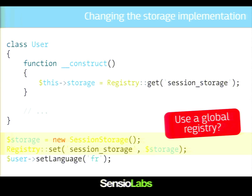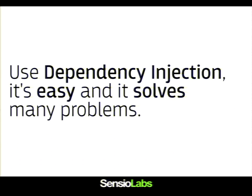I can't think of anything you can do with a registry that you can't do with dependency injection. But now we have a registry, which means my user class depends on another layer of abstraction. It's slower, less testable, and not really easy to understand. We have hardcoded conventions in the system — I need to know that the session storage is stored into the 'session_storage' key in the registry. It's more complex than dependency injection with no benefits. So please, use dependency injection — it's really easy and it solves many problems.